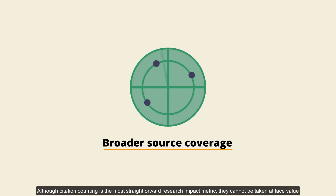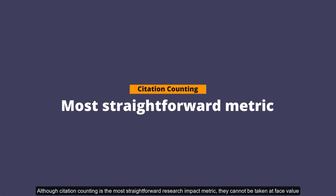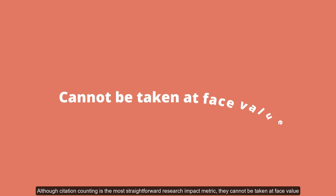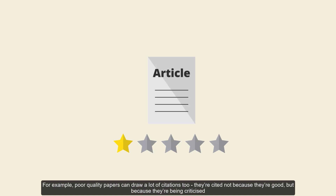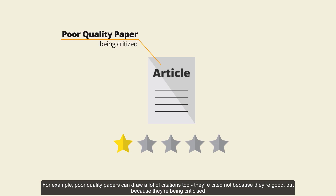Although citation counting is the most straightforward research impact metric, they cannot be taken at face value. For example, poor quality papers can draw a lot of citations too — they're cited not because they're good, but because they're being criticized.